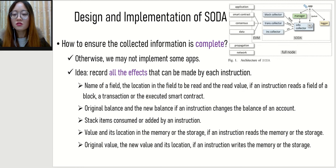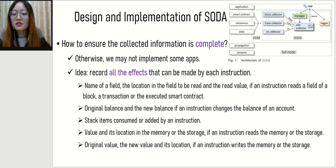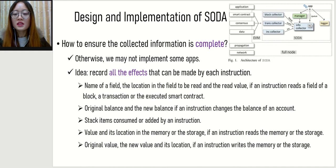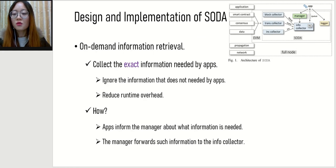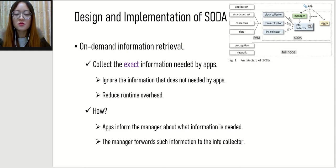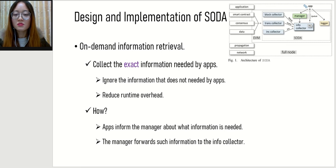There is a technical challenge: how to ensure the connected information is complete? Otherwise, we may not be able to implement some apps. Our idea is to record all the effects that can be made by each instruction. For example, Info Connector connects the original balance and the new balance if an instruction changes the balance of an account.